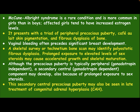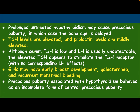This secondary central precocious puberty may also be seen in late treatment of congenital adrenal hyperplasia. Prolonged untreated hypothyroidism may cause precocious puberty, in which the bone age is delayed, TSH levels are elevated, and prolactin levels are mildly elevated. Although serum FSH is low and LH is usually undetectable, the elevated TSH appears to stimulate the FSH receptors with no corresponding LH effects. Girls may have early breast development, galactorrhea, and recurrent menstrual bleeding.